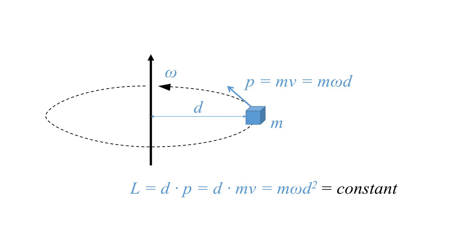Let's do a quick physics recap. The momentum P is the product of the mass and the velocity. In case of rotary motion, the velocity is the angular velocity omega (ω) times the distance to the rotation axis, represented here by d. The angular momentum L is the distance d times the momentum P, giving the expression m times ω times d squared. If there aren't any external forces acting on the system, L remains constant — it's conserved.